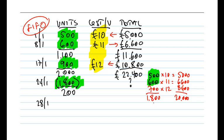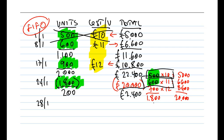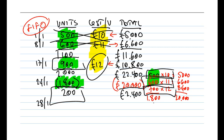Knocking off £20,000 from the £22,400 we previously had leaves £2,400 of inventory. We can double-check the logic: we've issued all of the opening inventory, all of the purchase on the 8th, and 700 of the 900 units from the 17th purchase. Since we purchased 900 and issued 700, we're left with 200 units at £12 each. A quick double-check: 200 units × £12 = £2,400. So that confirms our figure.